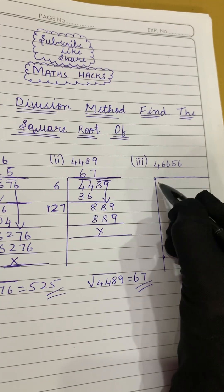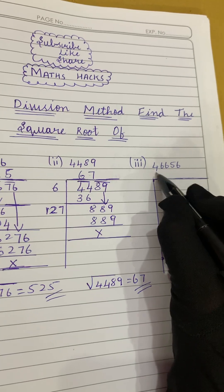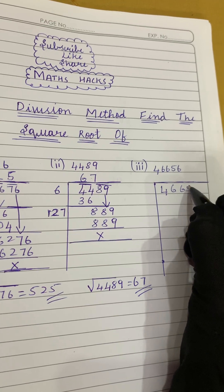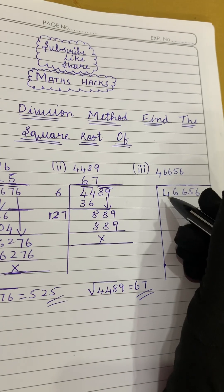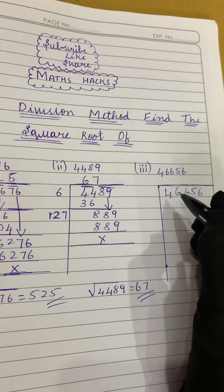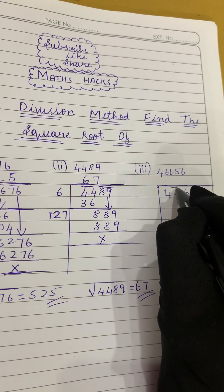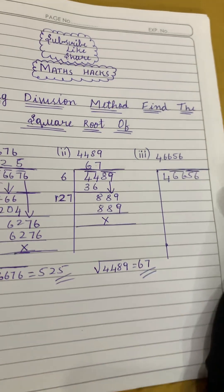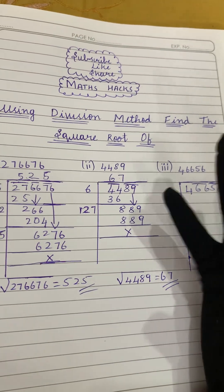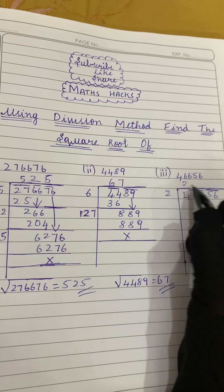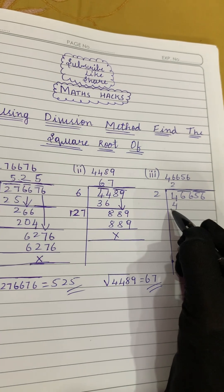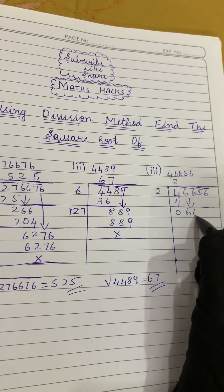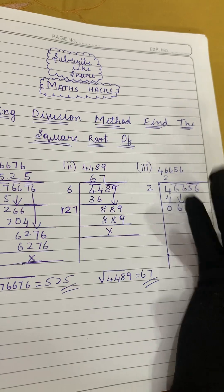Now let's solve the third question: find the square root of 46656. This has five digits. We pair from the right: 56 is one pair, 66 is another pair, and 4 is left alone. Since 4 is a perfect square — 2×2 = 4 — we solve it directly. 4 minus 4 gives 0. Now bring down the pair 66.